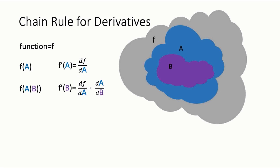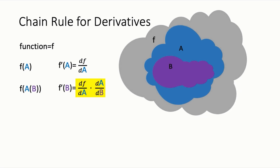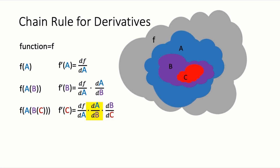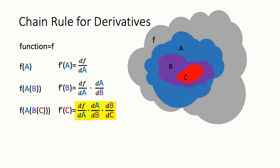Visually, we calculate how changes in b affect changes in a, then how those changes in a affect changes in f, and then we multiply all these values together. Now let's imagine b is a function of c. If we want to calculate the derivative of f with respect to c, we apply the chain rule reading from right to left. First we calculate the derivative of b with respect to c, then the derivative of a with respect to b, then the derivative of f with respect to a, and multiply them all together. Visually, we calculate how changes in c cause changes in b, how changes in b cause changes in a, how changes in a cause changes in f, and multiply all these changes together. And that's the chain rule.